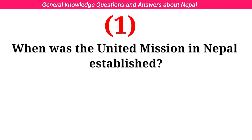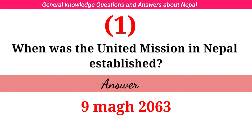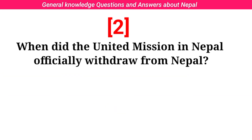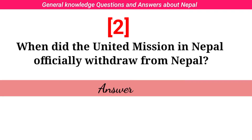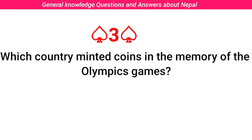When was the United Mission in Nepal established? Answer: 9 Mark 2063. When did the United Mission in Nepal officially withdraw from Nepal? Answer: 1 Mark 2067.